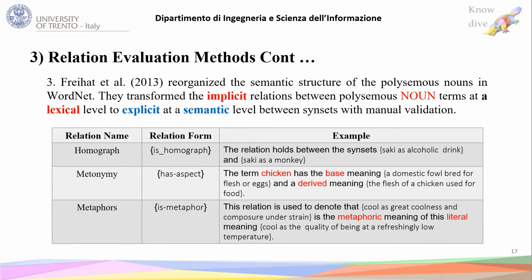The last paper in the last category, done by Prehat in 2013, reorganized the semantic relations of polysemous nouns from lexical to semantic level — meaning from implicit relations at the lexical level to explicit relations at the semantic level. For example, they use three relations. The first is a homograph relation connecting two sense-sets — for example, 'sake' as an alcoholic drink is a homograph with the synset 'sake' as purpose. They also used the 'has aspect' relation and 'is a metaphor,' converting metonymy to 'has aspect' relation and metaphors to 'is a metaphor.'